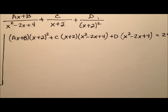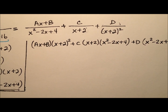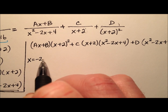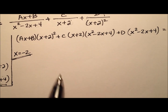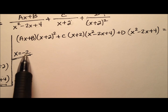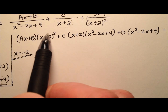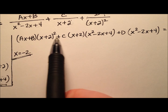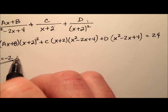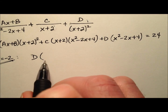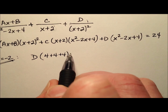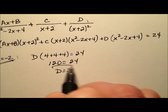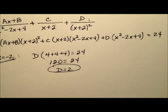Plugging in x equals negative 2 zeroes out the x plus 2 factors, eliminating the ax plus b and c terms. We're left with d times 4 minus 4 plus 4 equals 24, so d times 4 plus 4 plus 4 gives 12d equals 24, meaning d equals 2.